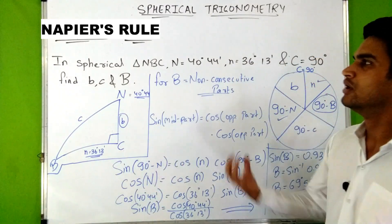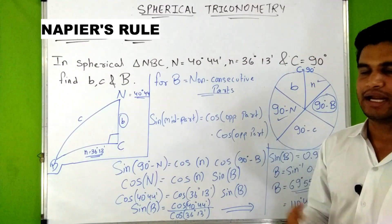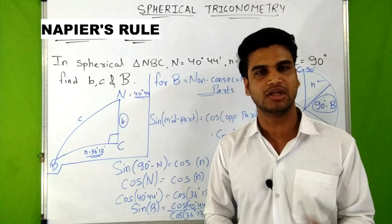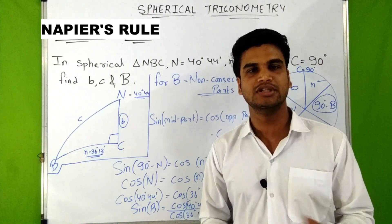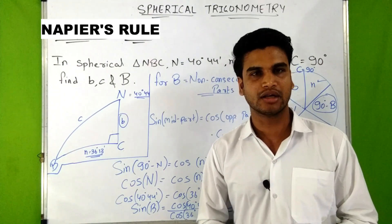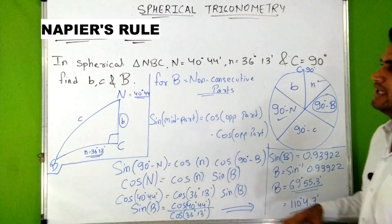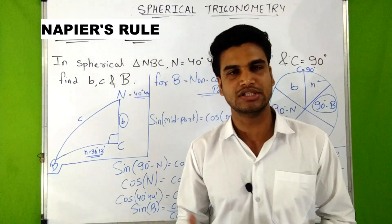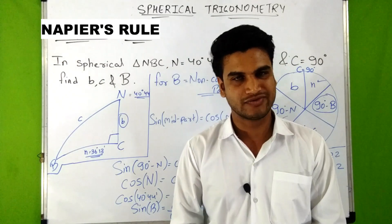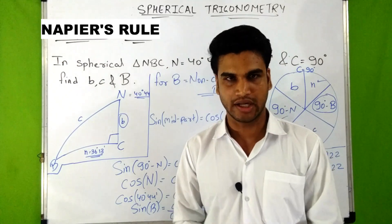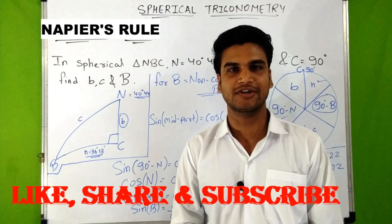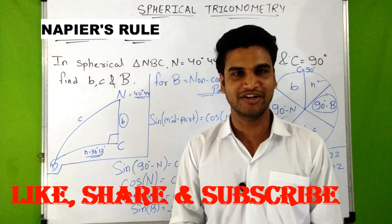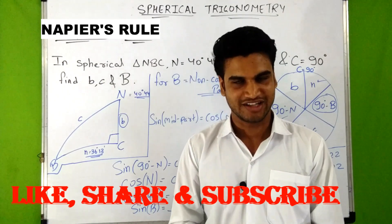This is how we use Napier's Rule on a right-angled spherical triangle. At the end of the video I will give some more questions, so please go through them to practice. In our next video we will discuss how Napier's Rule is used on quadrantal spherical triangles. I hope you liked this video — please subscribe to the channel, click the like button, and share the video. Thank you so much.